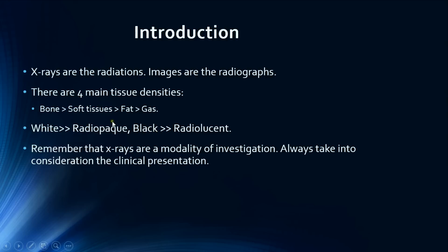In general there are four main types of tissue densities: bones being the densest tissues which appear white on the radiographs, soft tissues which appear as light gray, fat which appears as dark gray, and finally gas which appears black because it is the least dense tissue.